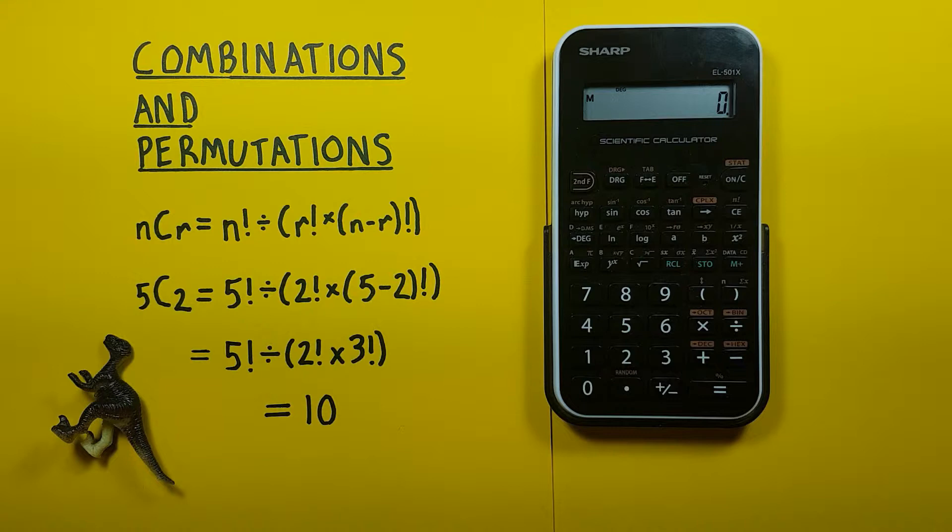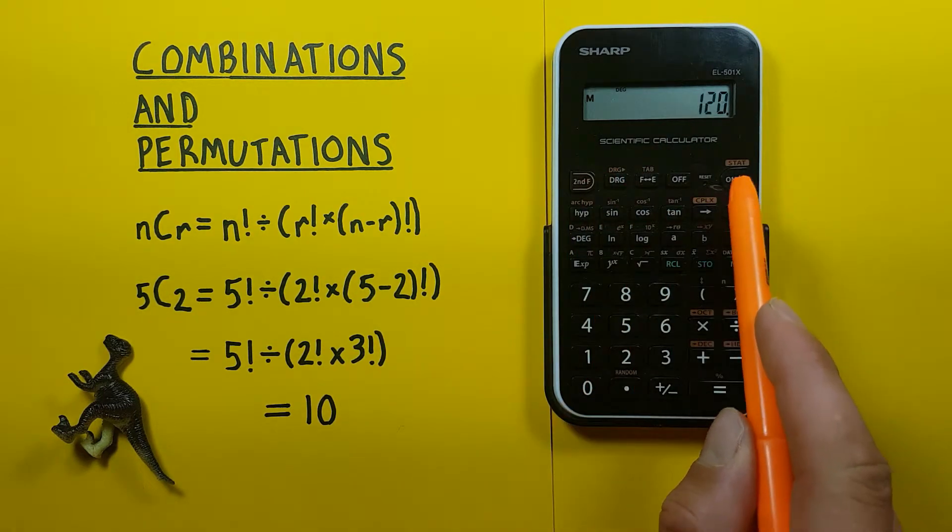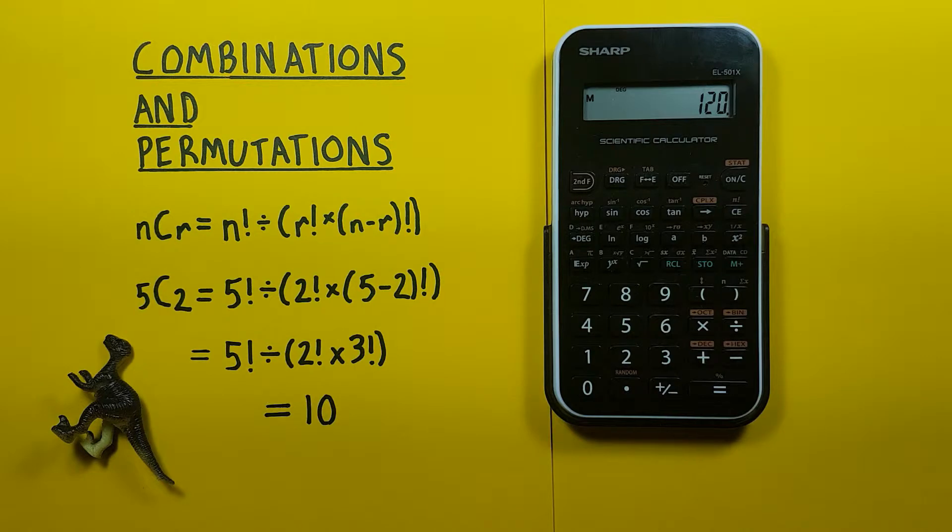All right to do this we want to use our bracket keys. So getting started we enter our 5 then second function factorial. See this calculates it right away but that's okay. We have our 5 factorial and we want to divide it by 2 factorial times 3 factorial. So we press divide by